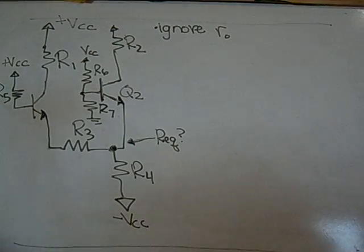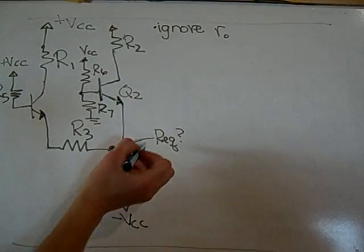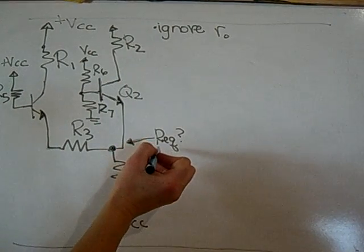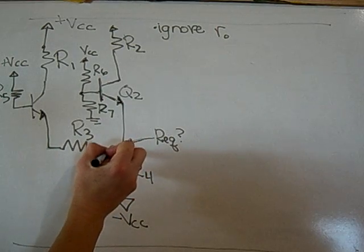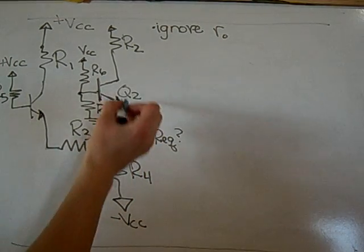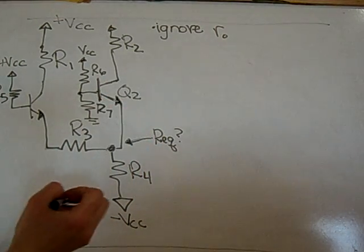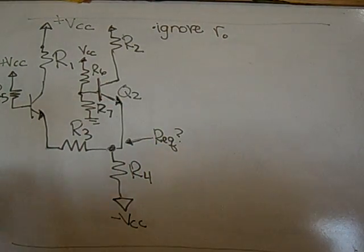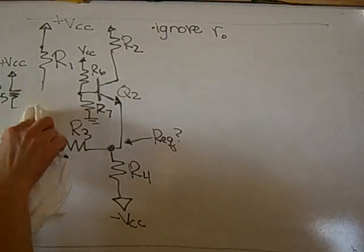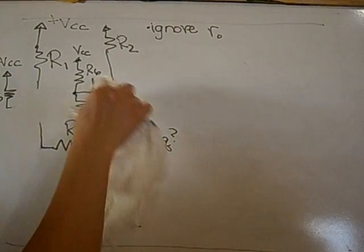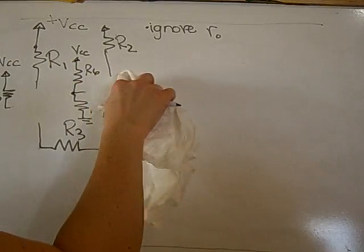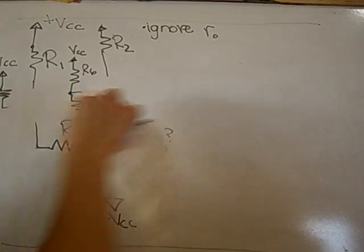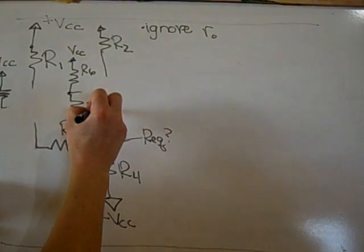This is an example of the resistance reflection rule, where I'm trying to find the equivalent resistance located at the emitter of Q2. To do this, the first step would be to remove the transistors and draw it in the hybrid-pi form.